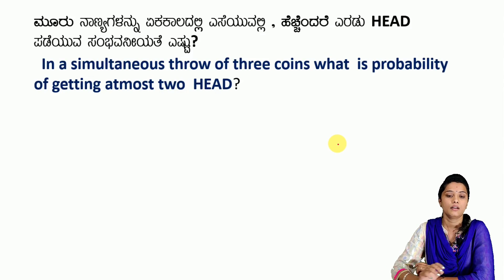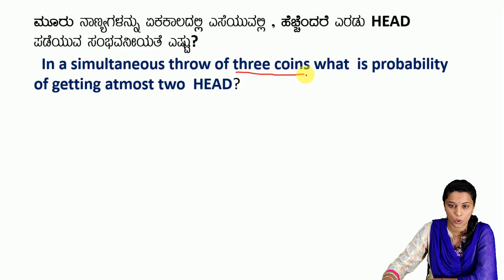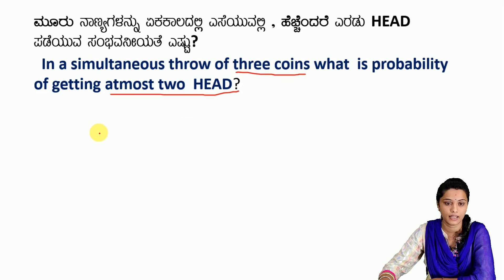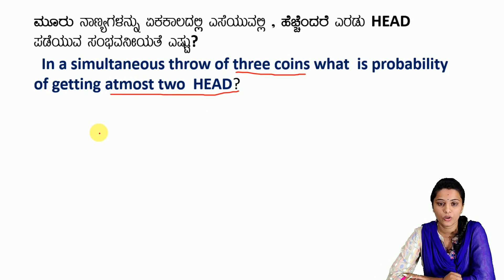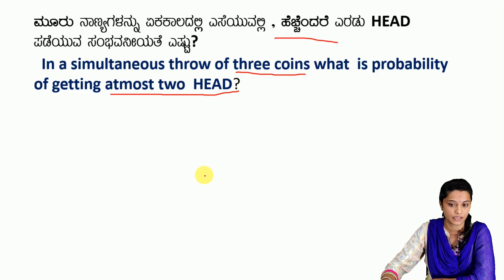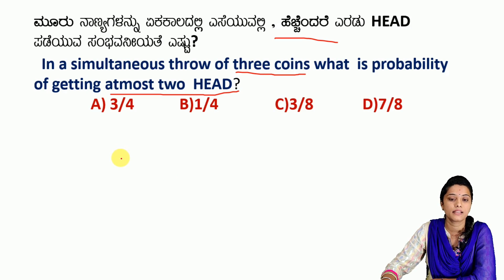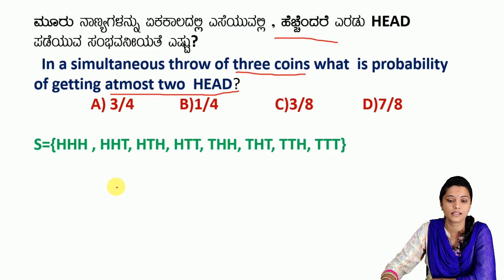The next question: toss 3 coins. What is the probability of getting atmost 2 heads? We apply the formula P(E) equals N(E) divided by N(S). First, calculate N(S): N(S) equals 2 power N, so 2 cubed equals 8. N(S) equals 8.